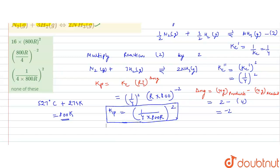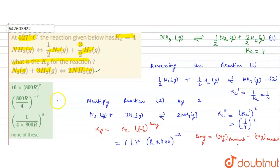So the correct option for the Kp of the reaction is the C option 1 upon 4 into 800R whole square. So I hope you understood the solution. Thank you.